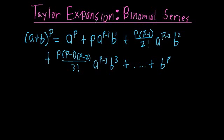Two quick things to point out: first, in every single term you can add the exponent on the a part and the b part and they always add up to p. The other thing is that the coefficients of each term look fairly complicated and intimidating, but there's a pattern. These coefficients have a special name — they're called binomial coefficients.